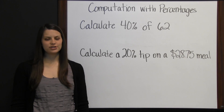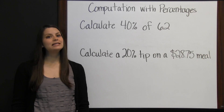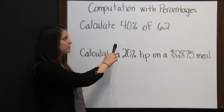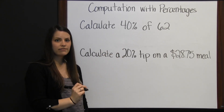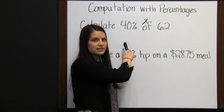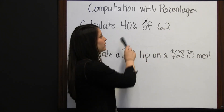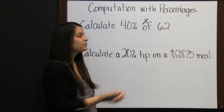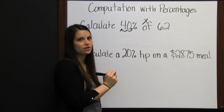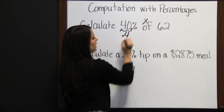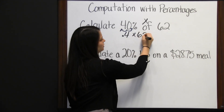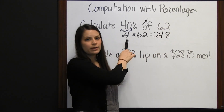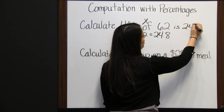Computation with percentages. In problems involving percentages, it is usually easiest to convert to a fraction or a decimal. First we're going to calculate 40 percent of 62. 'Of,' in math, means to multiply. So we're doing 40% times 62. Converting 40% to a decimal by moving the decimal two places to the left gives us 0.40, or 4 tenths. 4 tenths times 62 is 24 and 8 tenths. So 40% of 62 is 24.8.